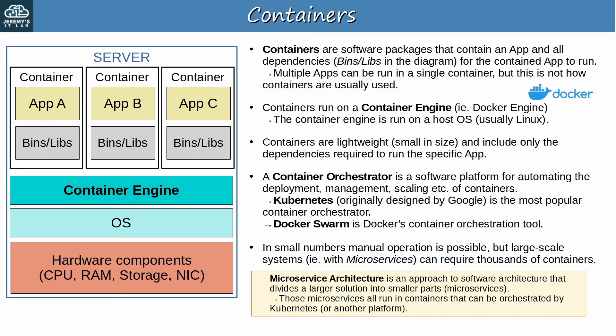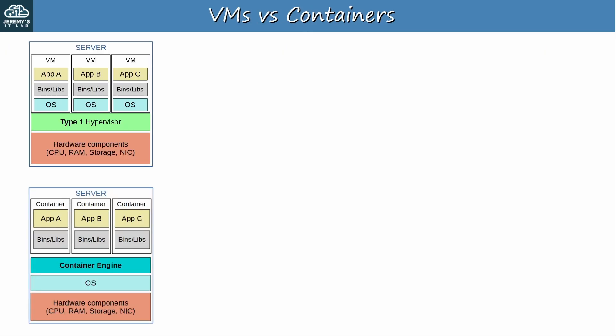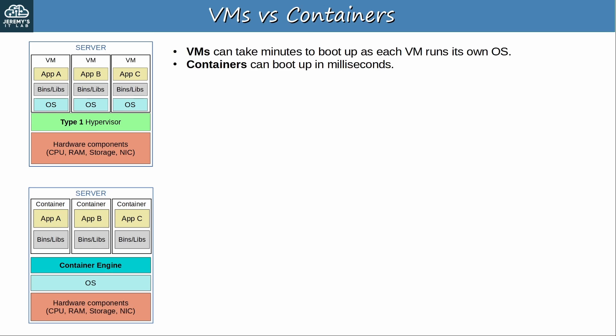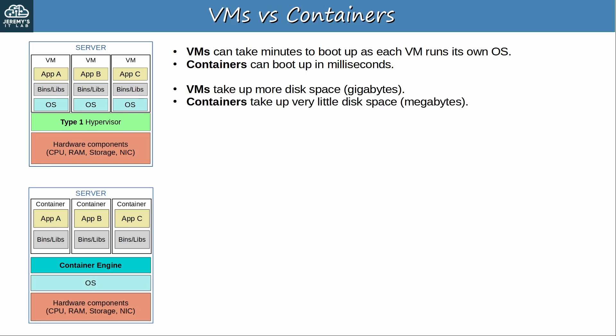That's a quick overview of containers. Now let's compare VMs and containers. These differences all stem from the fact that each VM runs its own OS, whereas containers all run on top of a shared OS. That major architectural difference has some implications that make containers favored in many cases. First of all, VMs can take minutes to boot up, whereas containers can boot up in milliseconds. This makes containers much more agile — if one container crashes, it takes very little time for another to boot up and take over.